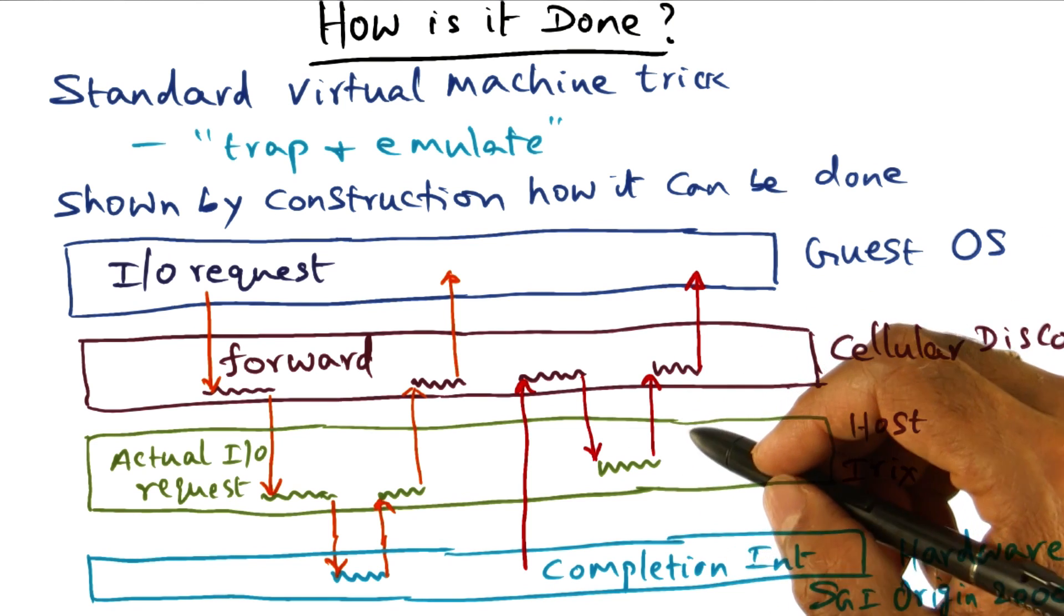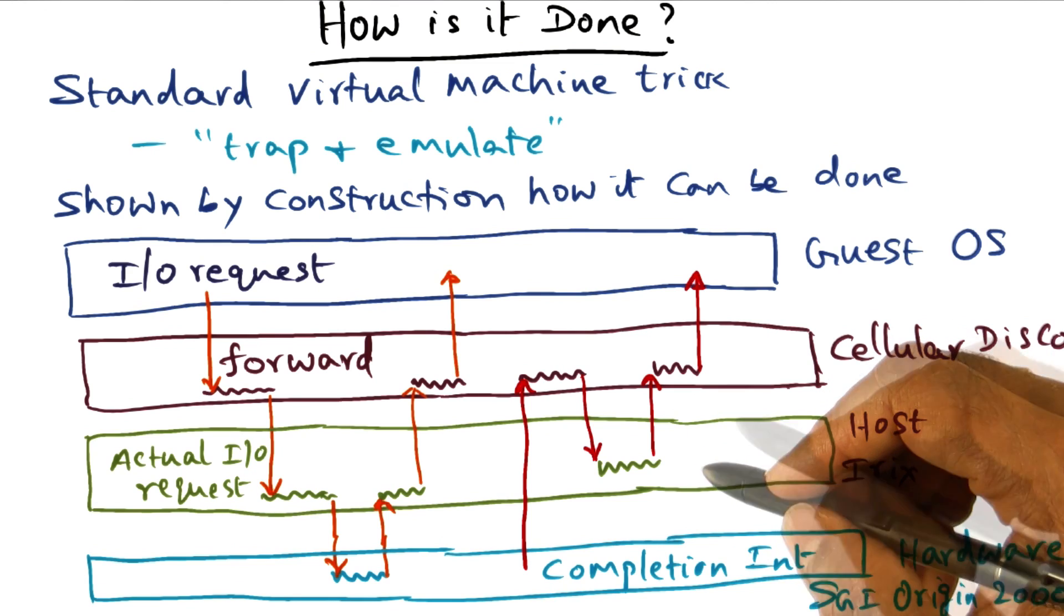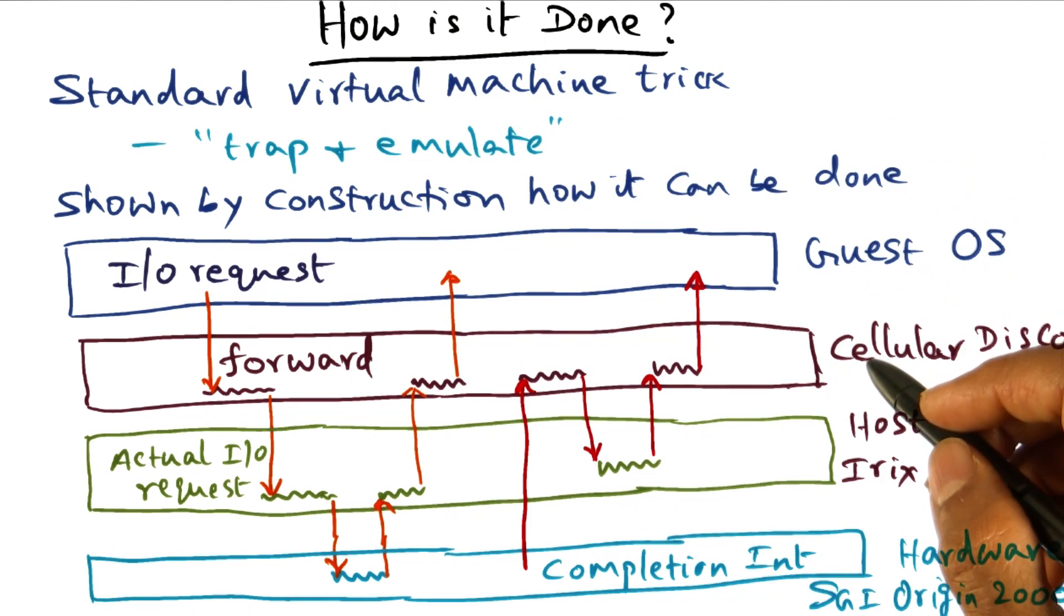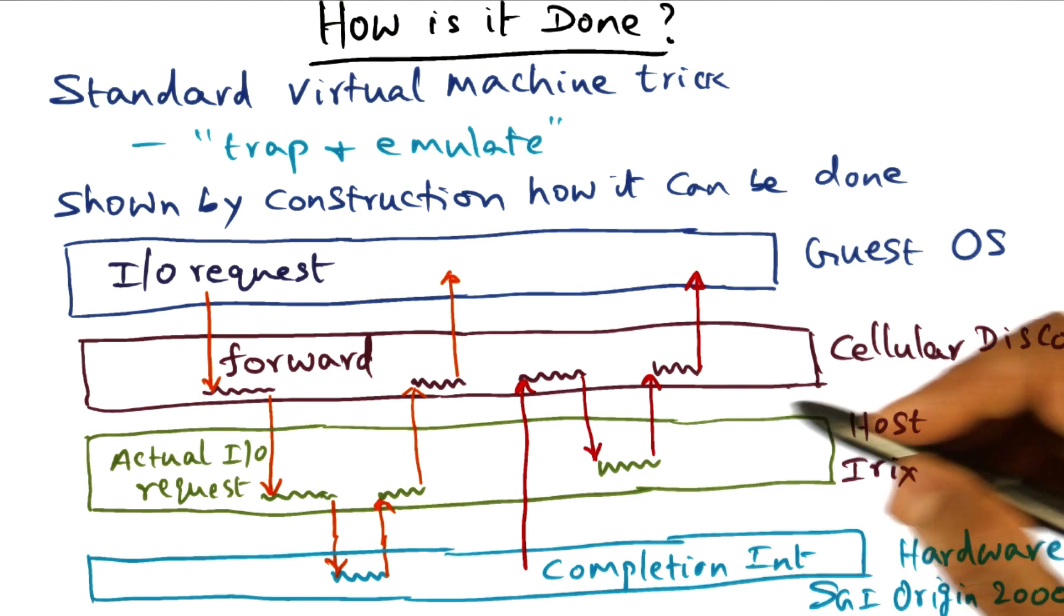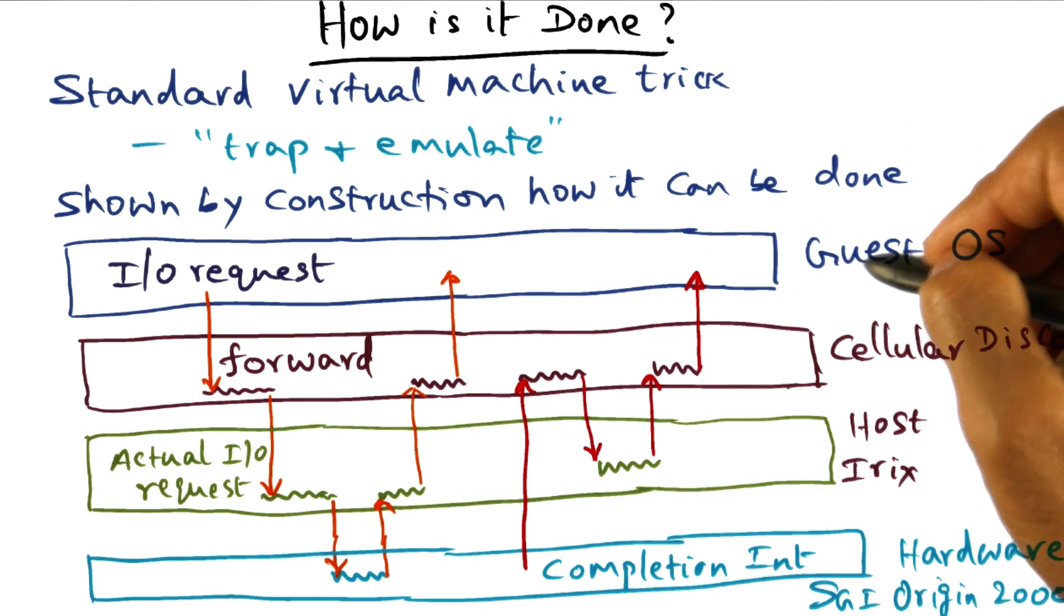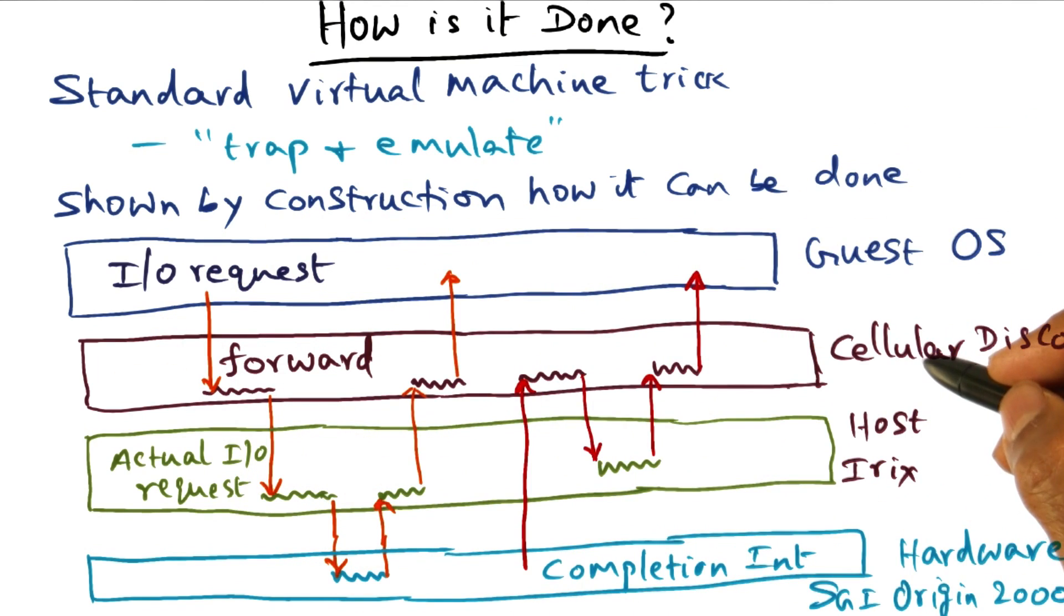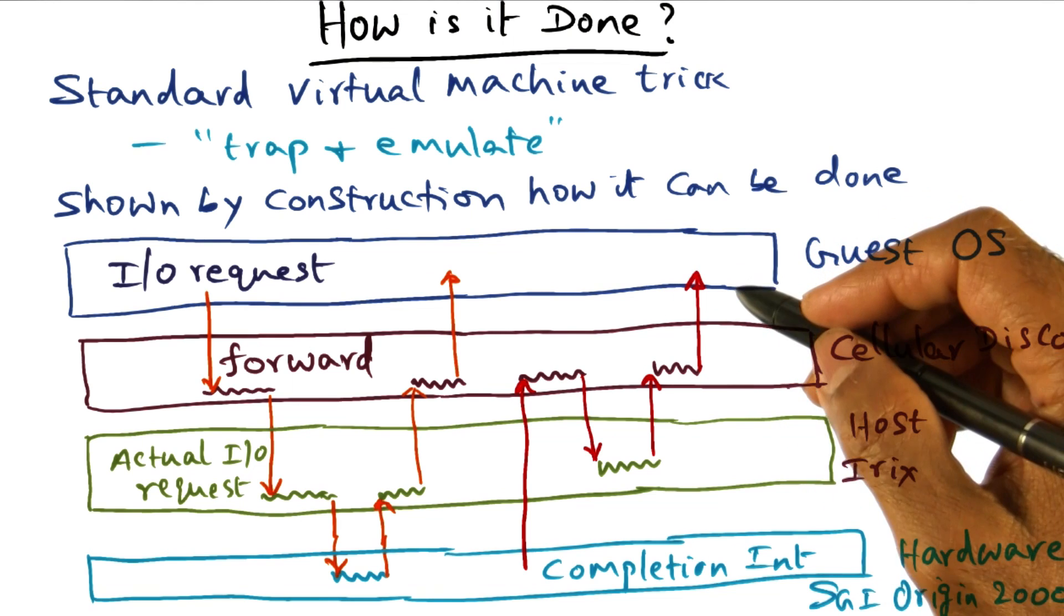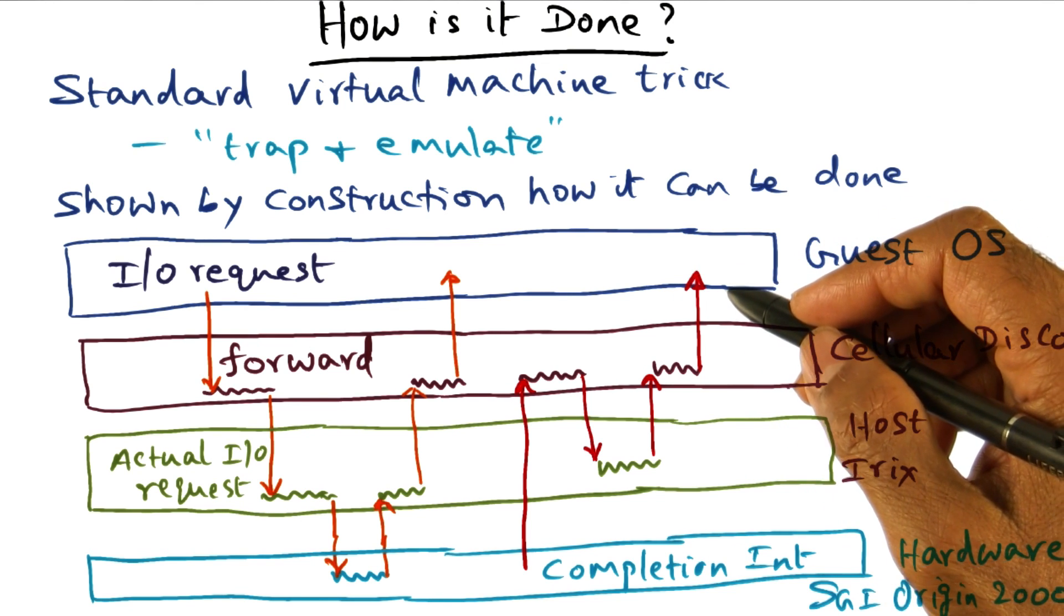They've shown that it can be done within 10% for many applications that run on the guest operating system. The proof of the pudding is in the eating. They've shown that the virtualization overhead can be kept low by demonstrating how applications can run in a guest operating system, and through the services provided by the VMM layer, Cellular Disco, the drop in performance can be kept fairly low.